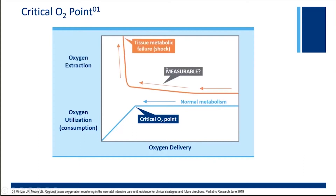Looking at this from an oxygen extraction point of view: in a state of normal metabolism, you can decrease oxygen delivery and notice a relatively stable oxygen extraction, as seen on the rightmost part of the graph. Further decreases in oxygen delivery are associated with subtle increases in oxygen extraction — until the critical O2 point is reached, and further decreases in oxygen delivery will now result in extreme increases in oxygen extraction and a clinical picture of tissue metabolic failure or shock. To summarize: everything stays normal for a long time as you decrease oxygen delivery. Your oxygen utilization remains normal; your oxygen extraction may show subtle increases. Once you surpass the critical O2 point, further oxygen utilization becomes dependent on oxygen delivery, with increasing extraction to maintain tissue oxygen needs and a clinical appearance of a very sick patient.